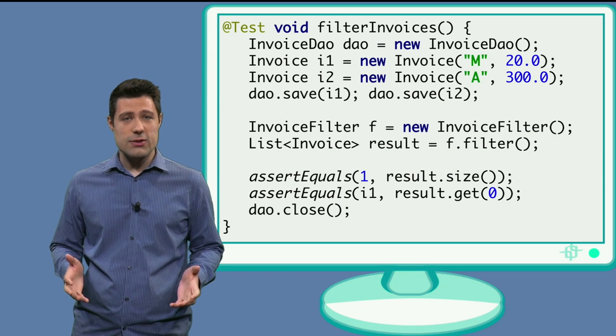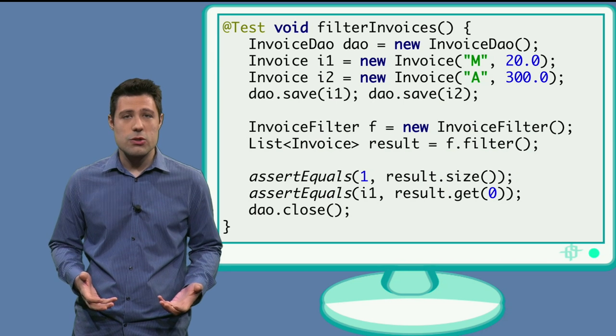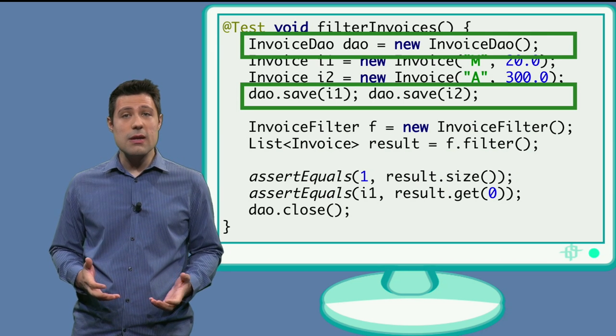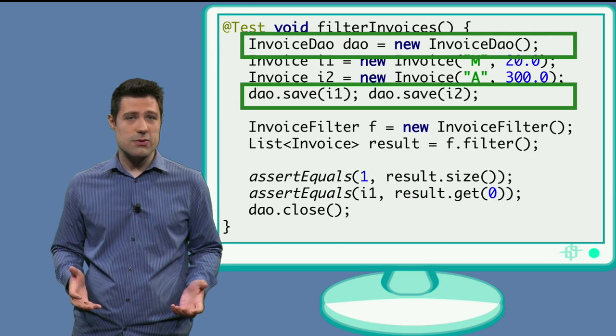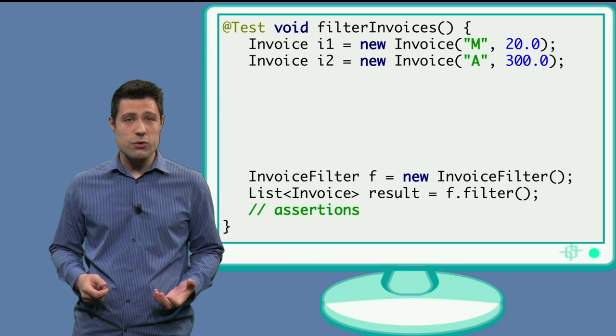So what we are going to do in our test is to get rid of the real database and mock it. So let's just start by completely deleting the database access part from the test. Then, now that our test doesn't use the database class, we introduce Mockito.